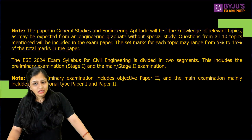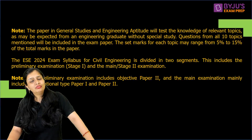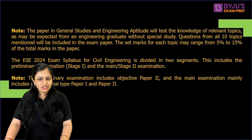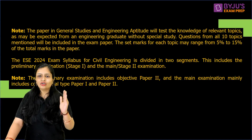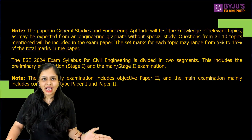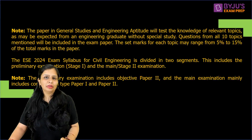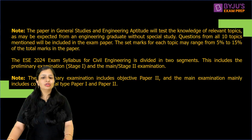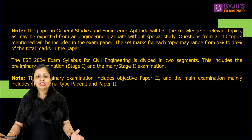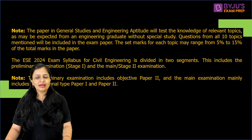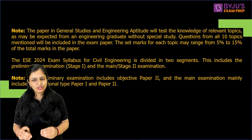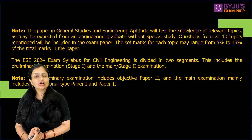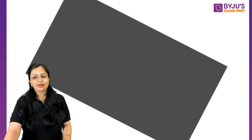For ESE 2024, the exam has two stages. Stage 1 includes General Studies, Engineering Aptitude, and a technical paper. Stage 2 has the mains paper. The preliminary exam is objective and the mains exam is conventional. Let's now talk about the detailed syllabus.